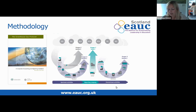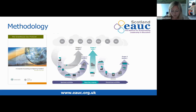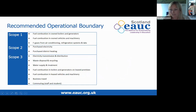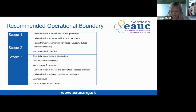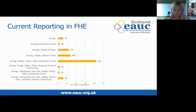The protocol covers the seven main greenhouse gases: carbon dioxide, methane, nitrous oxide, hydrofluorocarbons, perfluorocarbons, sulfur hexafluoride, and nitrogen trifluoride. It breaks emissions down into three scopes. Scope 1 are direct GHG emissions which the institution has control over, such as fuel combustion in owned boilers and vehicles. Scope 2 are indirect GHG emissions from the generation of purchased electricity, steam, heating and cooling consumed by the institution. Scope 3 are indirect GHG emissions which are a consequence of the institution's activities but which they do not directly control, such as sending waste to landfill, business travel, and commuting.